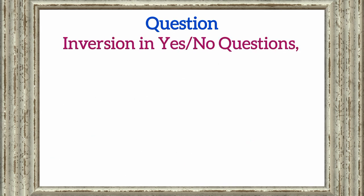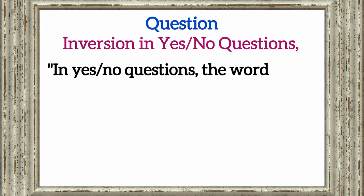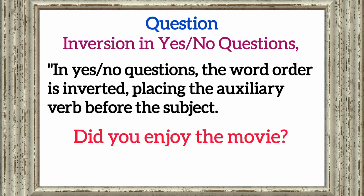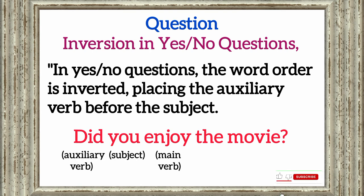In yes/no questions, the word order is inverted, placing the auxiliary verb before the subject. Example: 'did you enjoy the movie?' Here, 'did' is the auxiliary verb, 'you' is the subject, 'enjoy' is the main verb, and 'the movie' is the object.